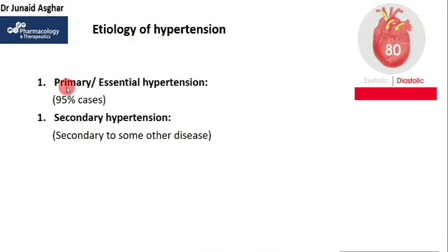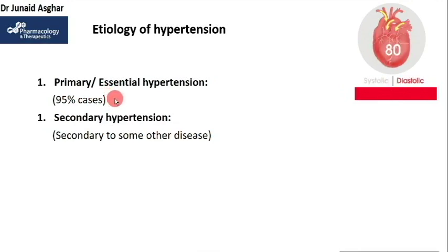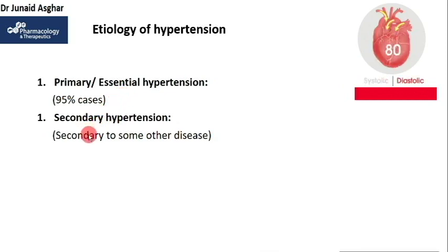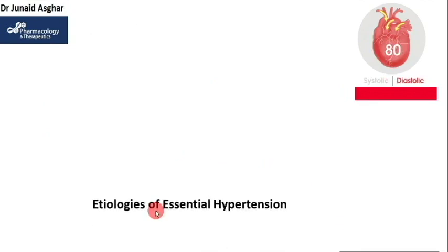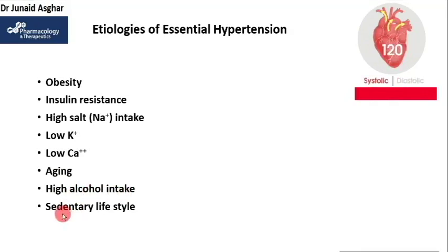There are two main etiologies of hypertension: primary or essential hypertension, and secondary hypertension. Primary hypertension accounts for 95% of all cases and is heterogeneous — it can have different causes in different patients. Secondary hypertension is high blood pressure caused by another medical condition. The etiologies of essential hypertension include obesity, insulin resistance, high salt or sodium intake, low potassium, low calcium, aging, high alcohol intake, and sedentary lifestyle.